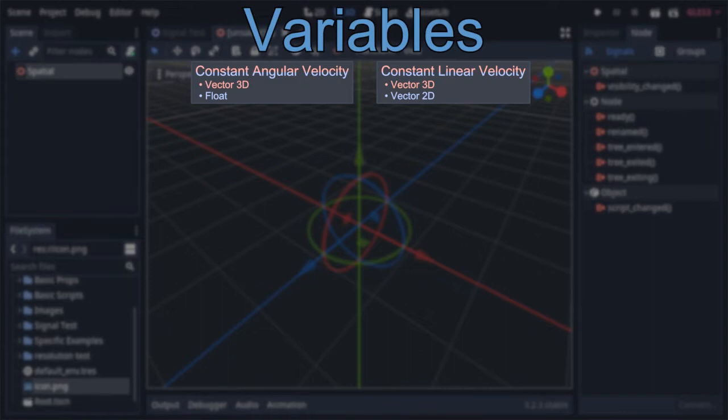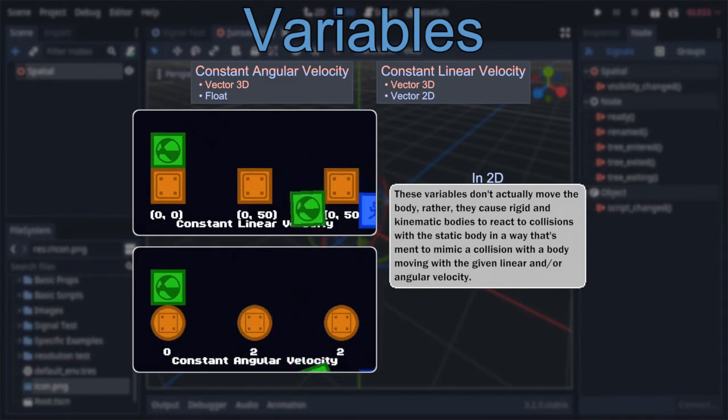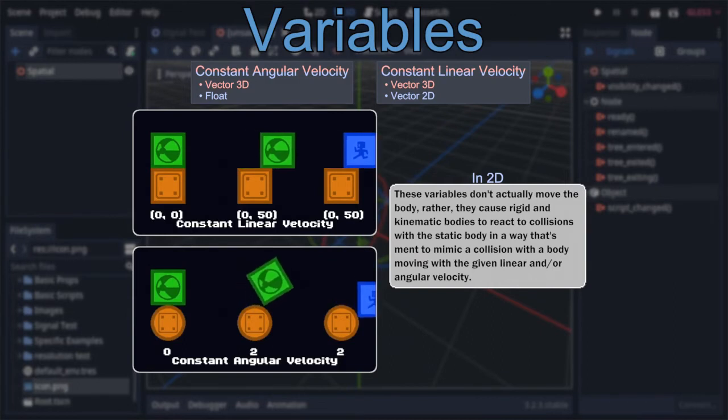Despite what their names may imply, these don't actually move the body. Rather, at least in 2D, they cause colliding kinematic bodies that are using the move and slide function to simply be moved a specific amount, and colliding rigid bodies to apply a force to themselves at the point of contact, with both reactions being based on the amount and type of given velocity.